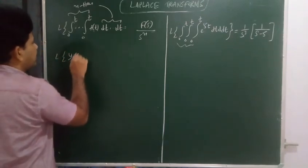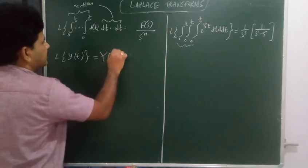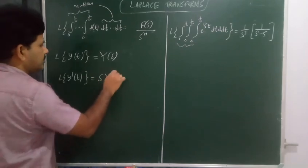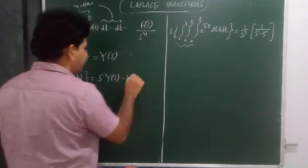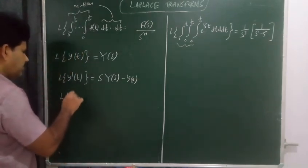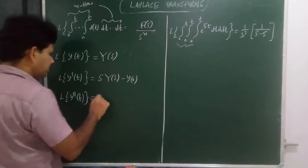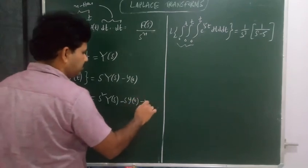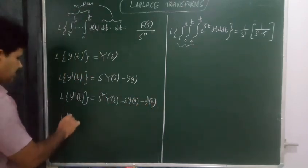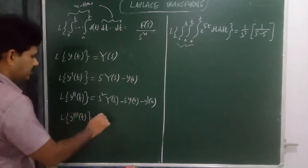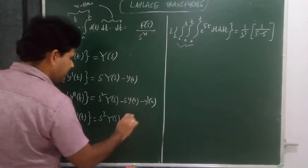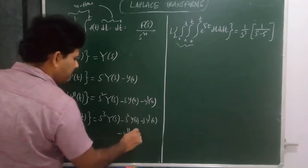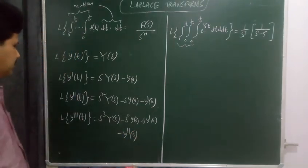Laplace transform of y(t) equals capital Y(s). Laplace transform of y'(t) equals s·Y(s) minus y(0). Laplace transform of y''(t) equals s²·Y(s) minus s·y(0) minus y'(0). Laplace transform of y'''(t) equals s³·Y(s) minus s²·y(0) minus s·y'(0) minus y''(0). These are the Laplace transforms of the derivatives of a function.